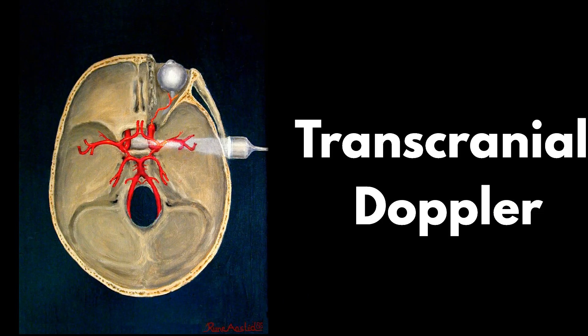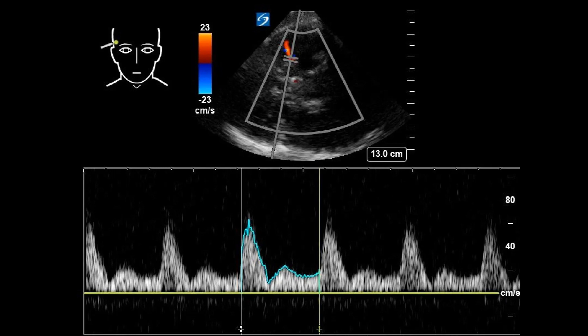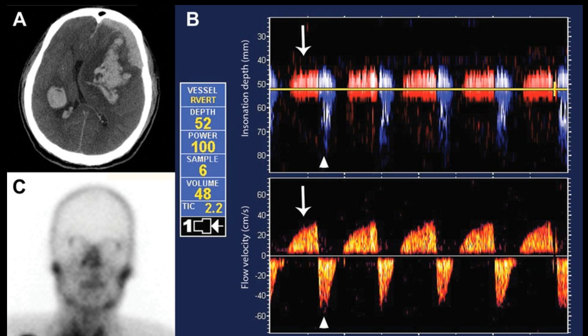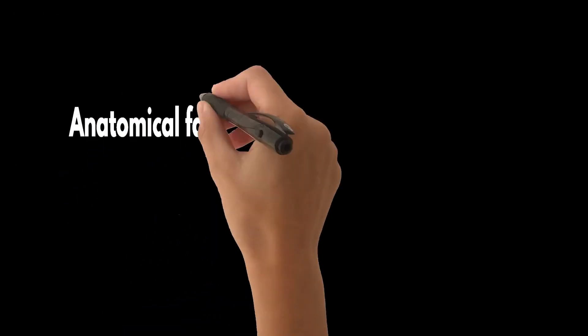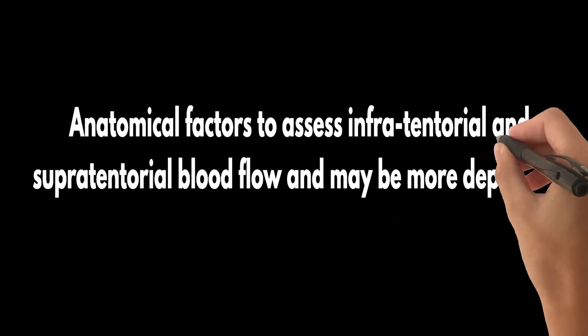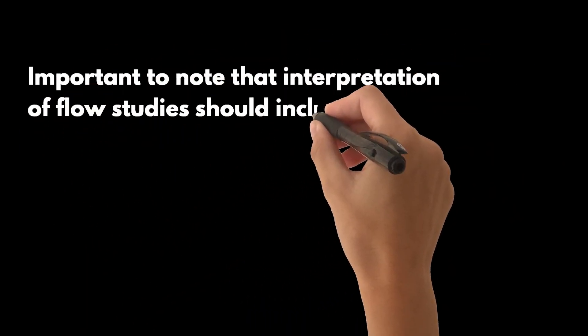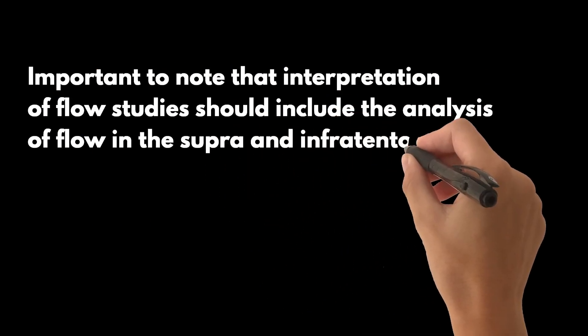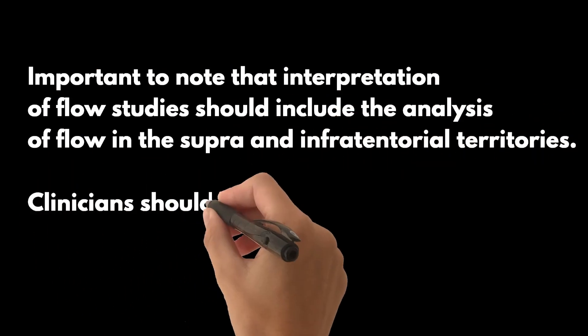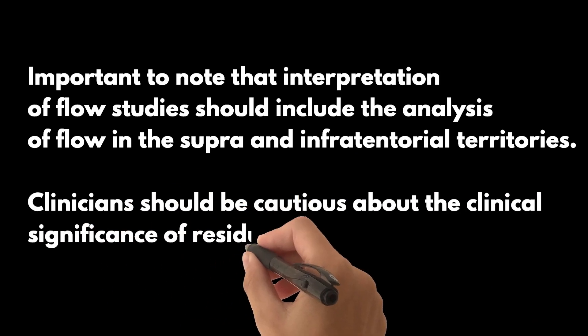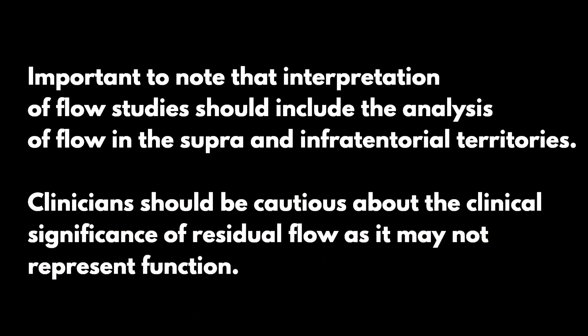Another method is transcranial Doppler, or TCD — a non-invasive and portable method for evaluating cerebral blood flow. In DNC, TCD typically demonstrates a lack of blood flow or a specific pattern called reverberating flow. However, it may be challenging due to anatomical factors to assess infratentorial and supratentorial blood flow, and may be more dependent on the operator's skill. It's important to note that interpretation of flow studies should include the analysis of flow in both supra- and infratentorial territories.